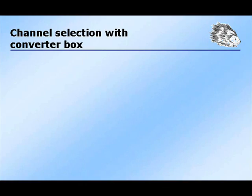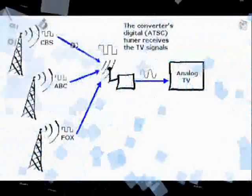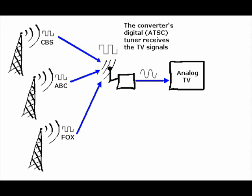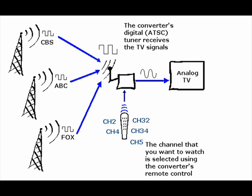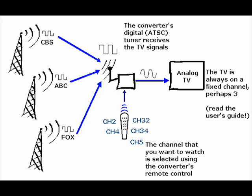If the TV's tuner will no longer be used to tune into channels, how will channels be selected with the converter box? The converter box receives the digital signals and converts them to analog. The majority of these boxes come with their own remote control, and channels are selected using this remote control. The analog TV must always be on the same channel, usually three. The converter box sends the analog signal to the TV using this channel. Reading the user's guide is recommended to determine the exact process.